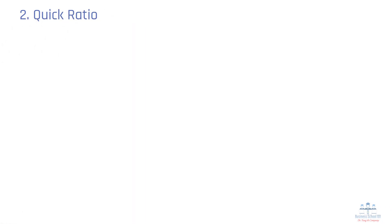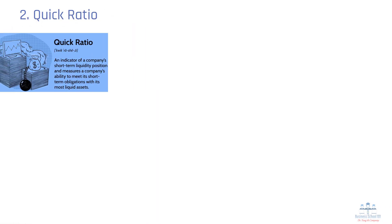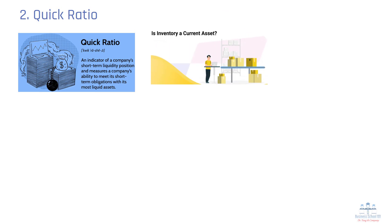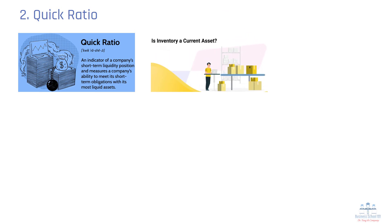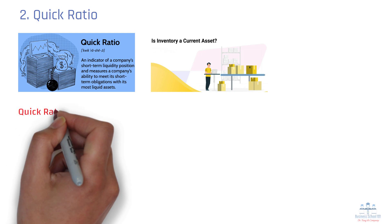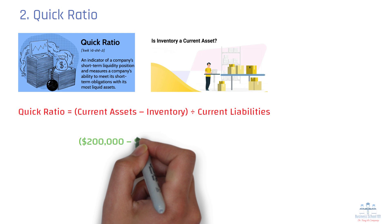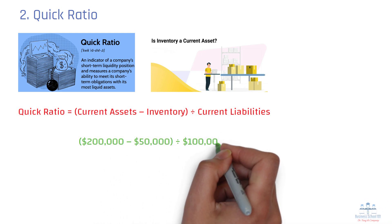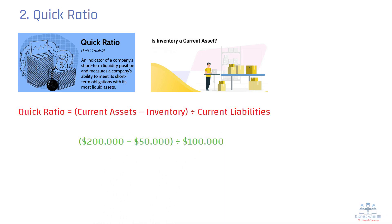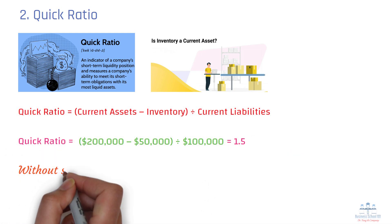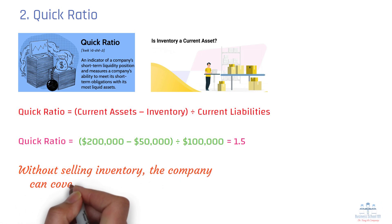Number 2: Quick Ratio. The quick ratio, also known as the acid test ratio, is a more stringent measure of liquidity than the current ratio because it excludes inventory from current assets. The rationale is that, while inventory is a current asset, it may take longer to convert into cash compared to more liquid assets like cash and receivables. The formula to calculate quick ratio is as follows. For example, if a company has $200,000 in current assets, $50,000 of that are inventory, and $100,000 in current liabilities, the quick ratio would be 1.5. This means that, even without selling inventory, the company can cover its short-term liabilities.